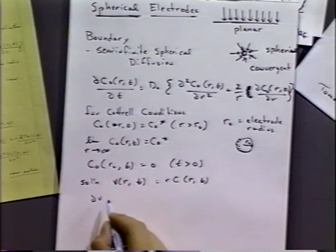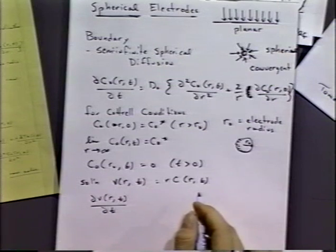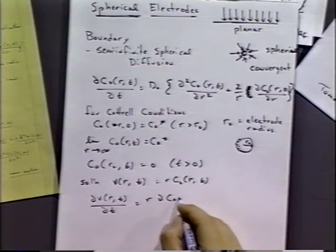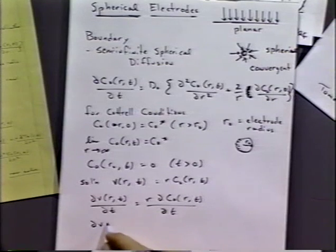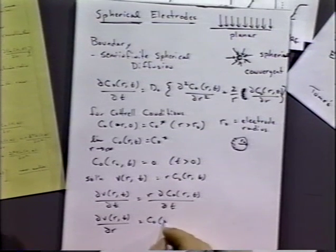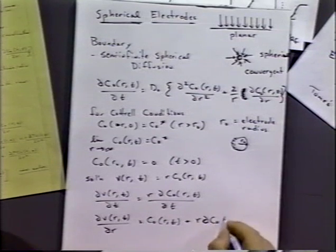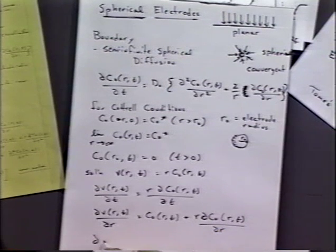Substituting in and making the form of the equations proper, we get: dV/dt = D₀ · d²V/dR². We can solve this because that's exactly the same equation we solved previously in the Cottrell case. So that substitution makes it much easier. I'm not going to show you the full solution — at this point you could probably do it yourself. You apply the appropriate boundary conditions, then convert back from V to the concentration form.